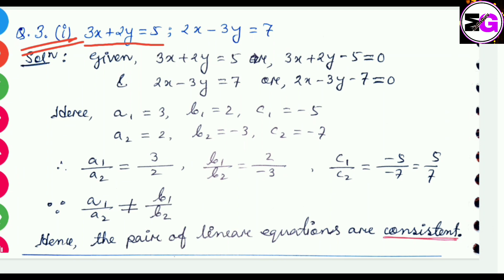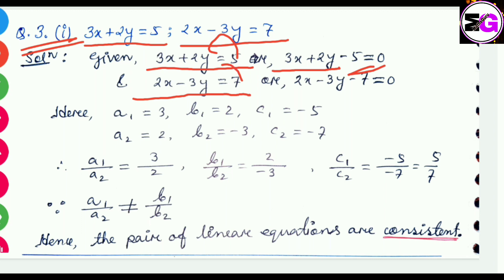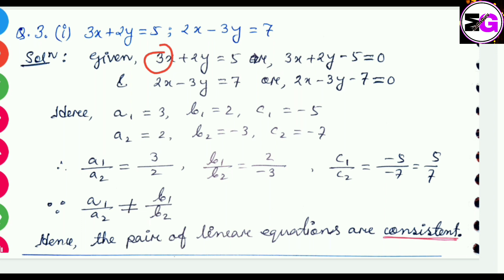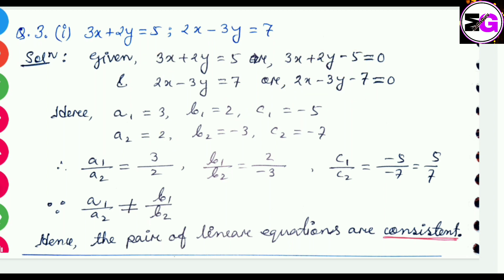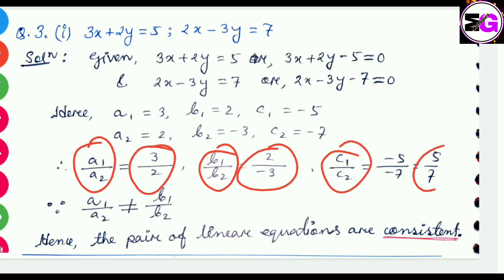Proceeding to question number 3(i): 3x plus 2y equals 5 and 2x minus 3y equals 7. We have to show whether these pair of linear equations are consistent or not. Rewriting: 3x plus 2y minus 5 equals 0 and 2x minus 3y minus 7 equals 0. So a1 is 3, a2 is 2, b1 is 2, b2 is minus 3, c1 is minus 5, c2 is minus 7. The ratios are: a1/a2 equals 3/2, b1/b2 equals 2 by minus 3, and c1/c2 equals 5/7. Since a1/a2 is not equal to b1/b2, the pair of linear equations are consistent.